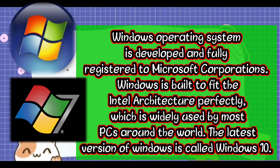The second operating system we have is Microsoft Windows. Everyone loves Windows — it is the most widespread operating system on personal computers. The Windows operating system is developed and fully registered to Microsoft Corporation. Windows is built to fit into the interface perfectly and is widely used by most PCs around the world.